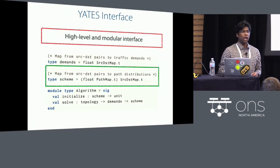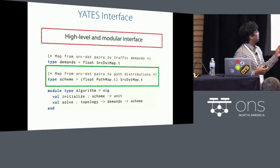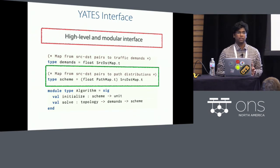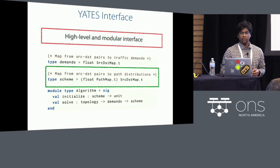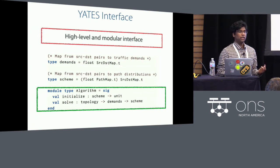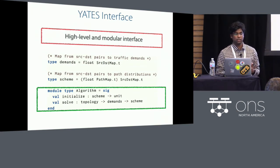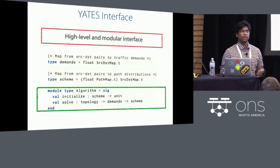Let's look at an example of this interface. The key type is scheme, which represents a routing scheme for a traffic engineering system. A scheme simply maps a source and destination pair to a probability distribution over paths, and the weight of each path represents the relative amount of traffic to be sent over that path. The interface for a traffic engineering algorithm requires an initialization function and a solve function. The solve function takes the topology and the current traffic matrix and generates a routing scheme. As demands or topology change due to failures, you can repeatedly invoke the solve function to generate an updated routing scheme.